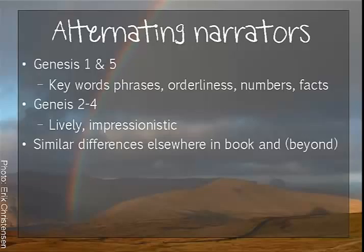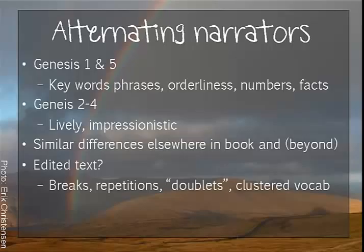With evidence that suggests Genesis might be an edited text — such as breaks, repetitions, doublets (that's two versions or seemingly two versions of a same or similar story), and clustered vocabulary — this sense of different narrators has led historically minded scholars to distinguish several strands in the book.